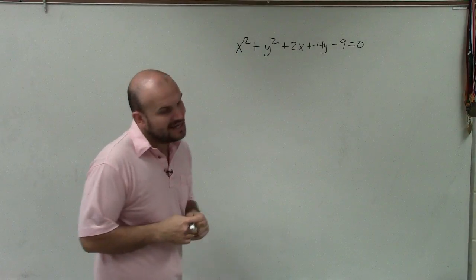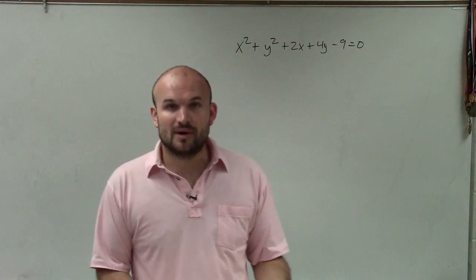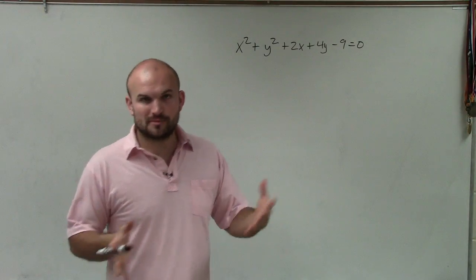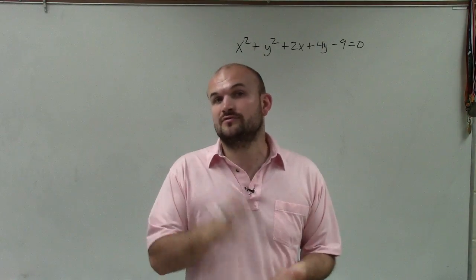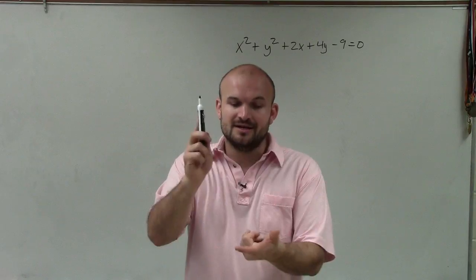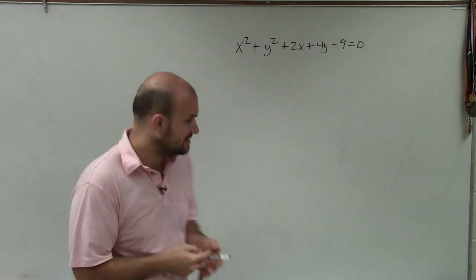So to do that, what we're first going to have to do is complete the square to put it into one of our standard form equations, and then we can identify where the major axis is - is it horizontal or vertical? And then we can start identifying the center, the foci, the vertices, and the co-vertices.